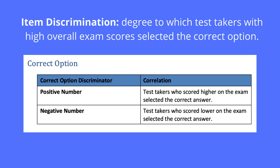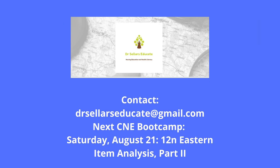The degree to which test takers with high overall exam scores selected the correct option reflects correct option discrimination. A positive number means high-scoring students also answered correctly; a negative means low-scoring students answered correctly. We want our item discrimination to always be positive — that's a good thing. If you're tuning in prior to our Saturday, August 21st session, go ahead and send us an email to find out more about part two of the item analysis boot camp. If you're tuning in after that date, these sessions have been recorded so you won't miss a thing. Thank you for tuning in, and we'll see you next time — have a great one.